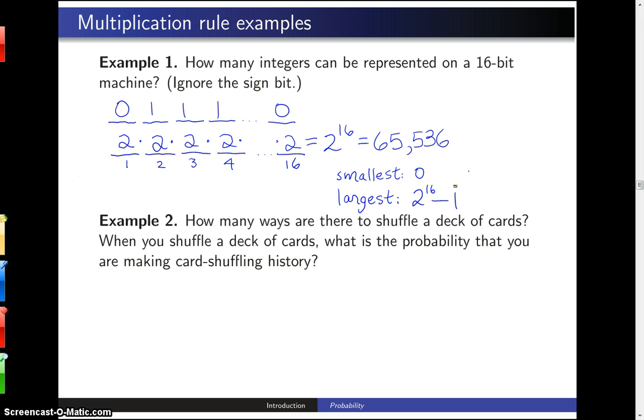Likewise, if you have a coin which you are going to flip 16 times, there are 2 to the 16th different possible sequences of heads and tails.